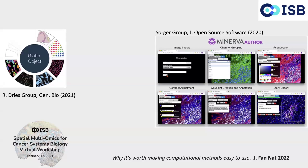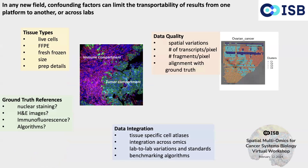Here are key questions we'll be addressing throughout the workshop: tissue types — live cells, FFPE, fresh frozen — size, preparation details, and tissue age. Data quality is particularly important in spatial omics, including spatial variations in quality across samples, number of transcripts per pixel, number of fragments per pixel for ATAC-seq, and alignment with ground truth. Ground truth includes nuclear staining, H&E, and immunofluorescence. And data integration — looking at ovarian cancer is not the same as looking at melanoma or brain cancer, so tissue-specific cell atlases help provide higher resolution interpretation of datasets.